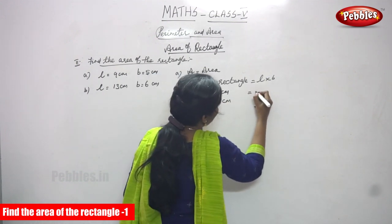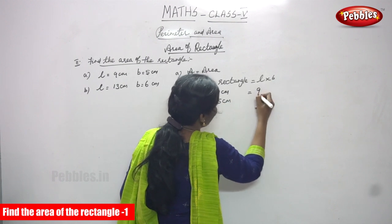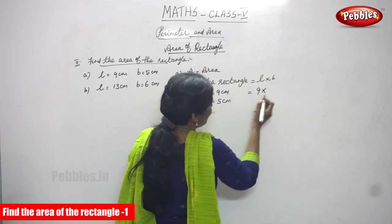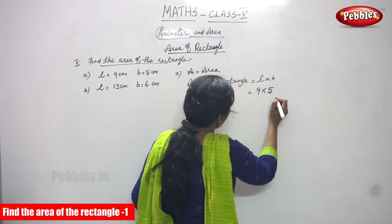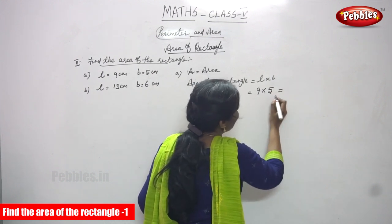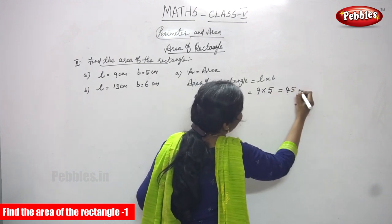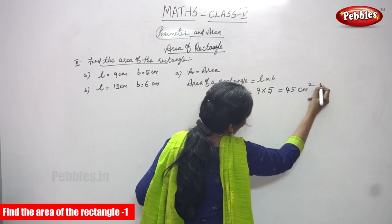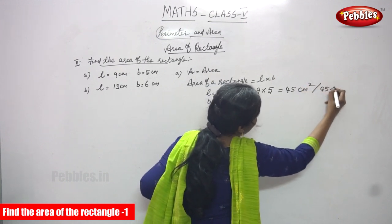So you have to apply, L means you have to substitute the value of 9 and what is the value of breadth? That is B, substitute the value of B is equal to 5. So you have to multiply 9 into 5 because you can get 45 cm square or 45 cm.